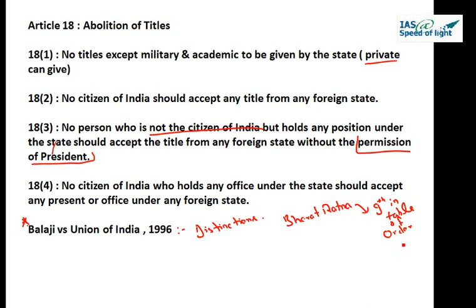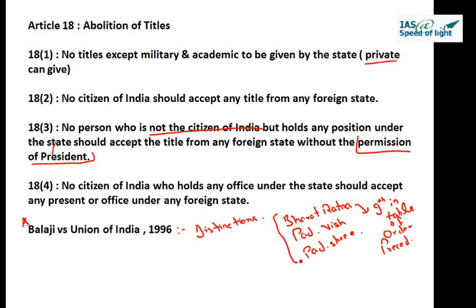Distinctions like Bharat Ratna, which is ninth in the table of order of precedence, Padma Vibhushan, and Padma Shri are not considered 'titles' under Article 18. This is Article 18, on abolition of titles, which is part of the right to equality.